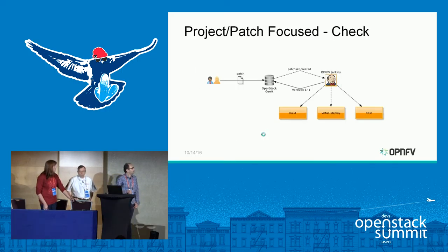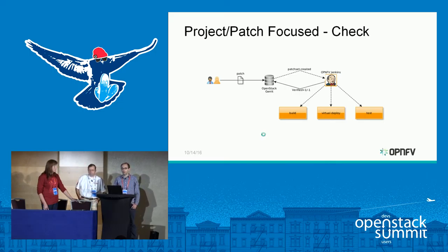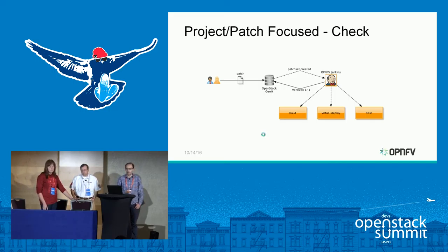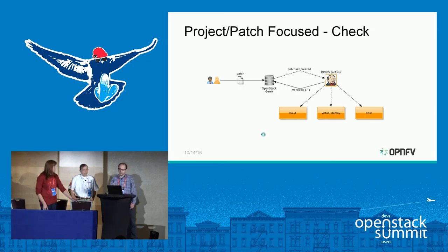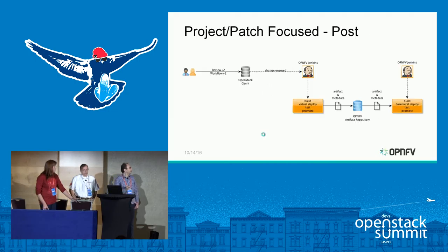In the project patch-focused CI, a developer contributes something to an OpenStack repo. That contribution triggers something in OPNFV CI — OPNFV Jenkins builds if needed, does a virtual deployment, and runs smoke testing. Then we give feedback to that specific project so a developer can see if they broke something in OPNFV and fix it. On top of the regular OpenStack feedback cycle, we give similar feedback from the OPNFV side.